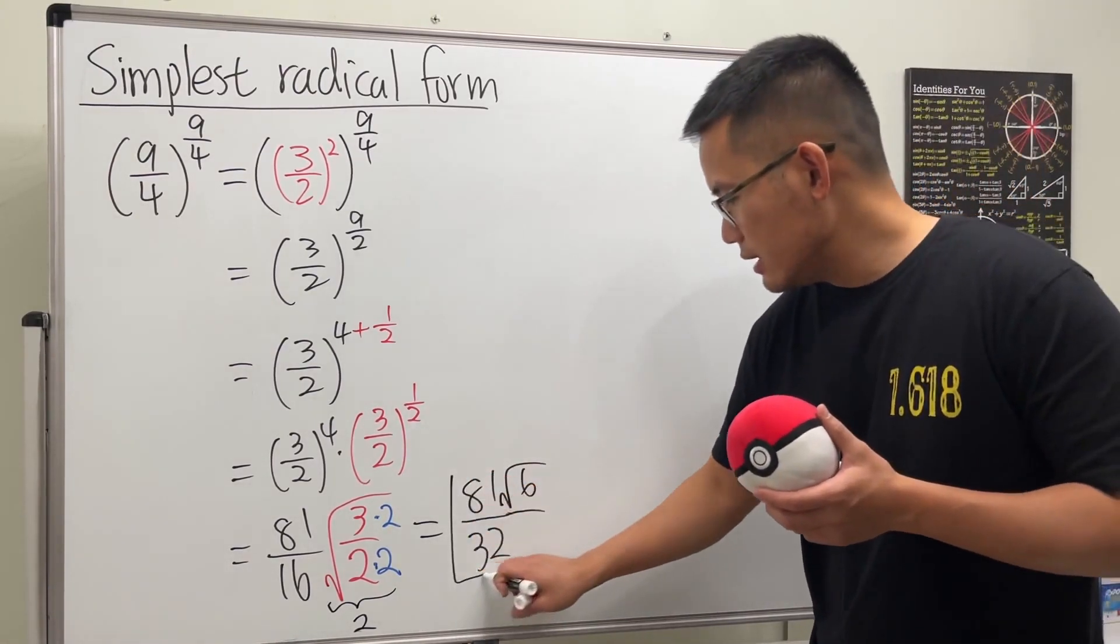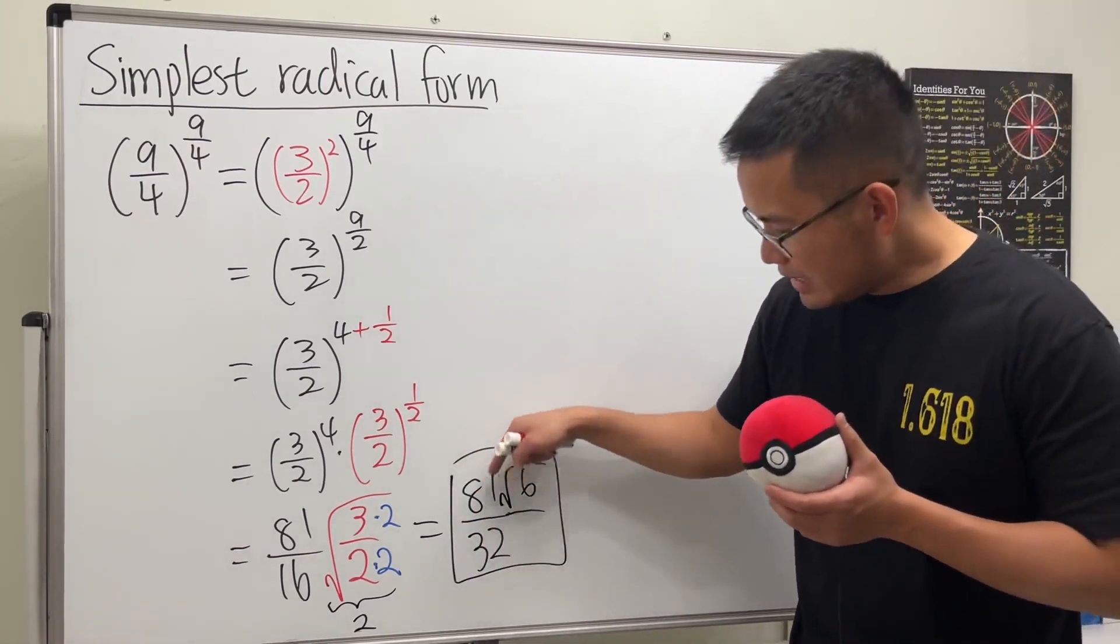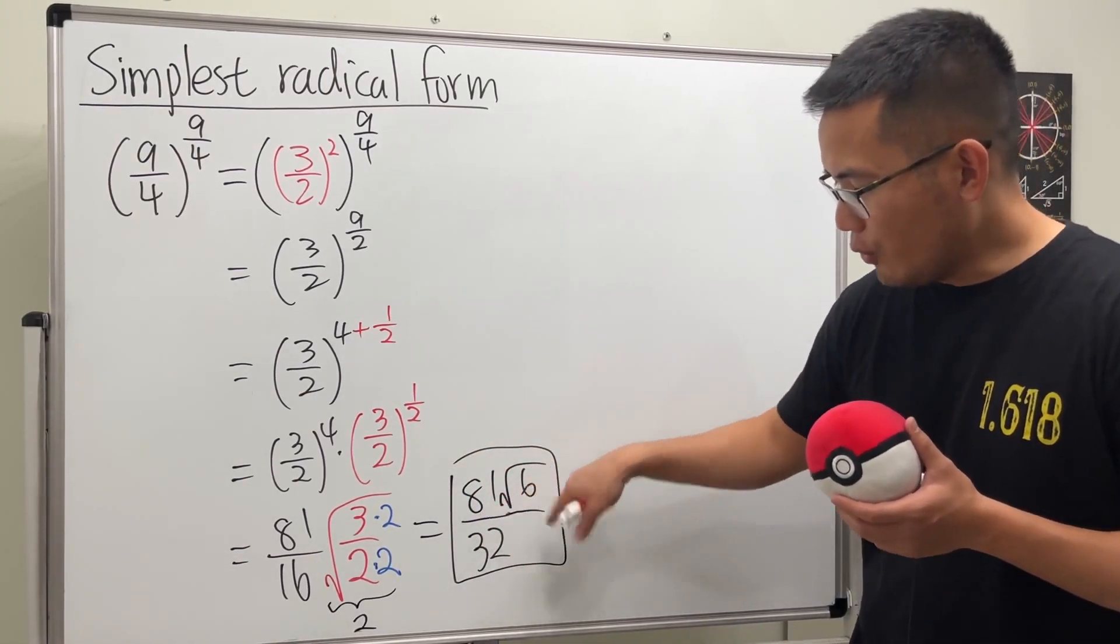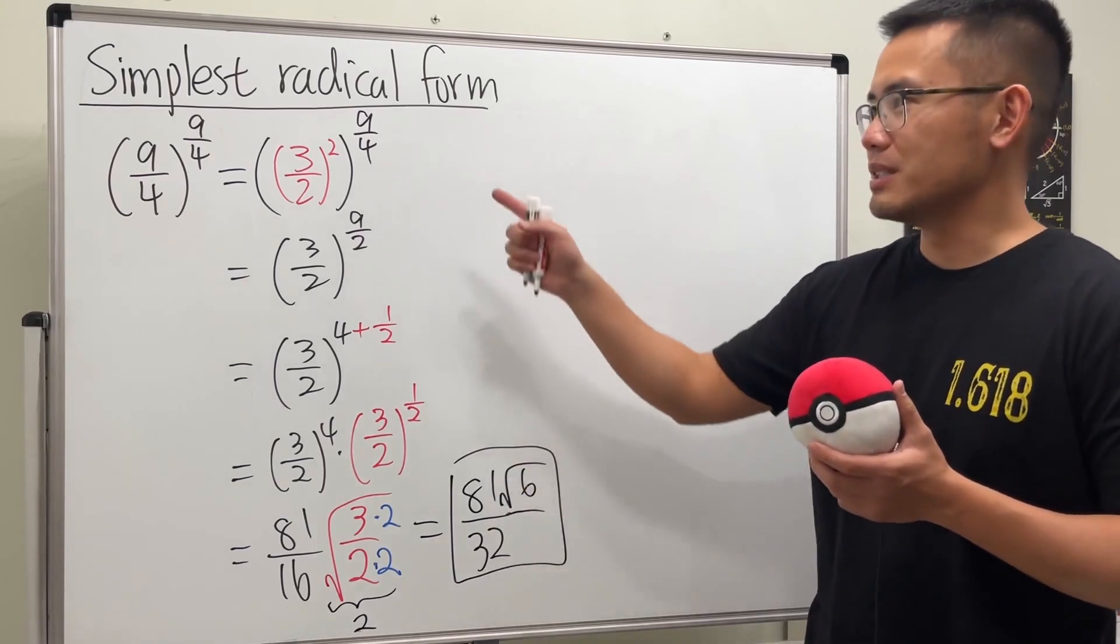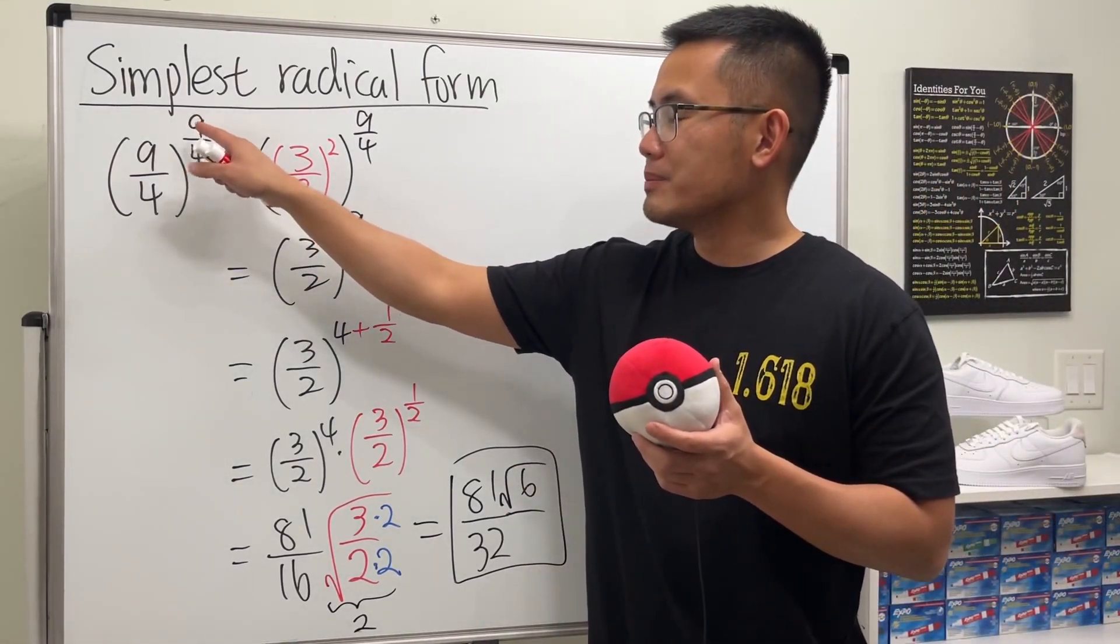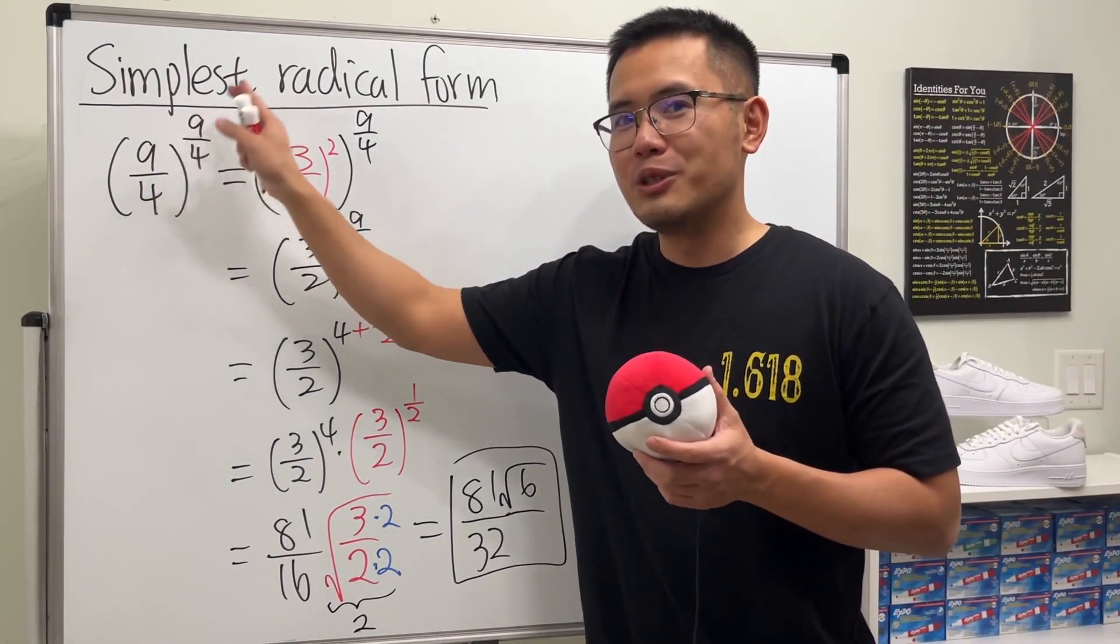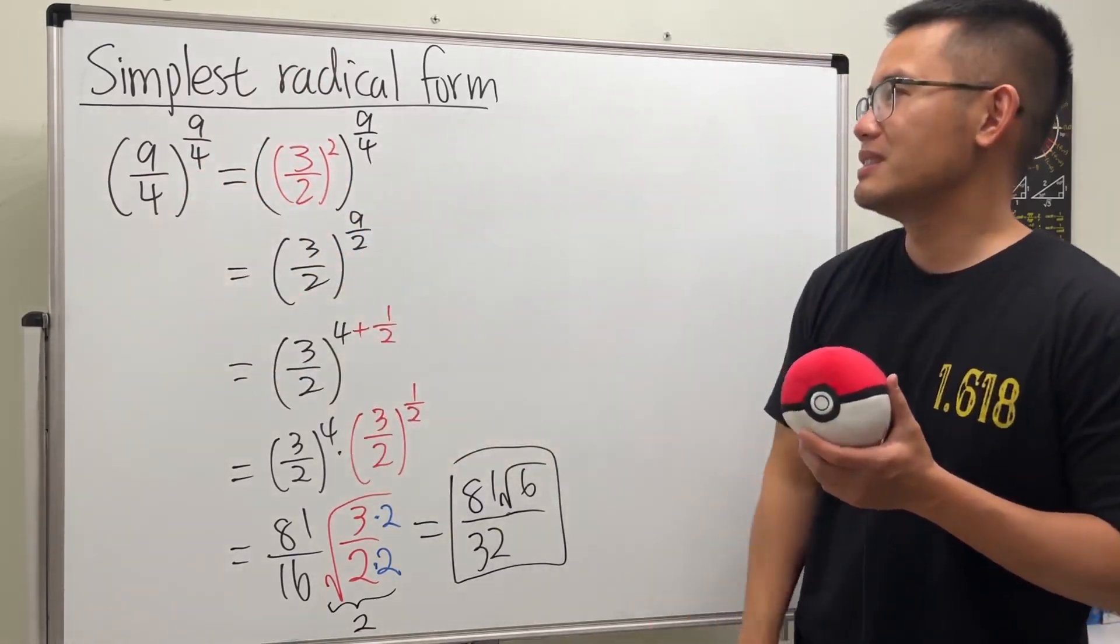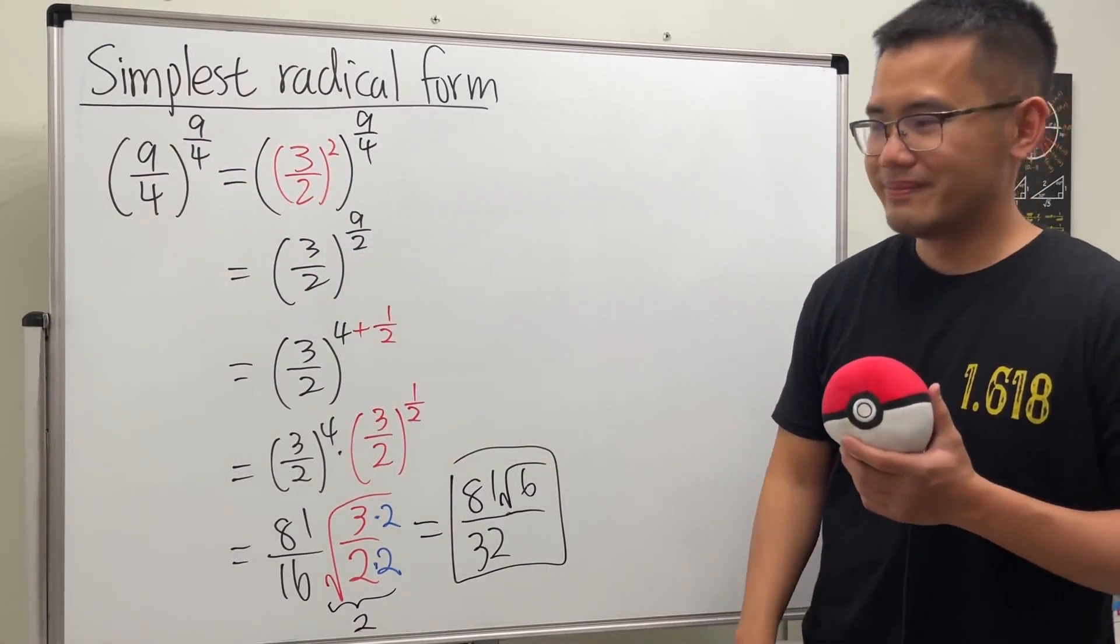So this is the final result. 81 times the square root of 6 over 32. And that's how to simplify a rational exponent to its simplest radical form. That's it.